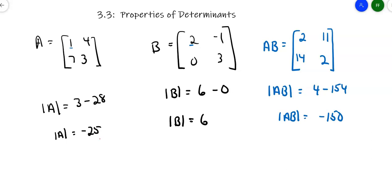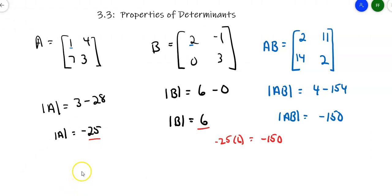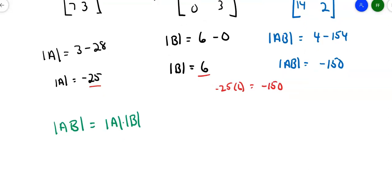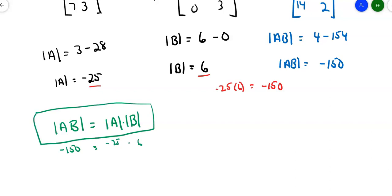One matrix has a determinant of negative 25 and the other has a determinant of 6. Negative 25 times 6 equals negative 150. It turns out this is not a rule that works only in this case — it works in all cases. The determinant of a product of two matrices is actually the product of their determinants. And since these are both numbers, the determinant of AB can also equal the determinant of B times the determinant of A. The determinant of a product is the product of the determinants.